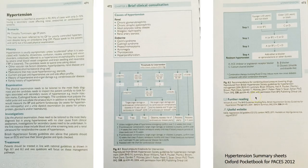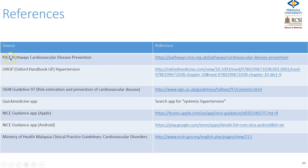Finally, here are references including the NICE pathways for cardiovascular disease prevention, the Oxford Handbook of General Practice, the SIGN guideline, the Quick Medicine app, the NICE guidance app for Apple and Android devices, and the Clinical Practice Guidelines of the Ministry of Health Malaysia on cardiovascular disorders, which includes hypertension. Thank you.